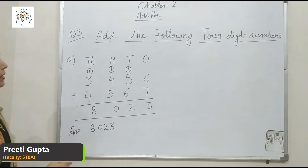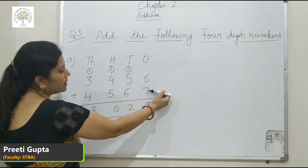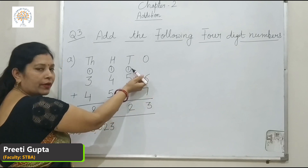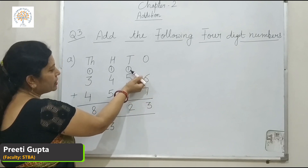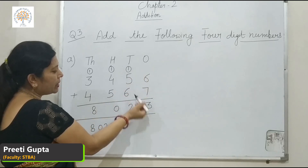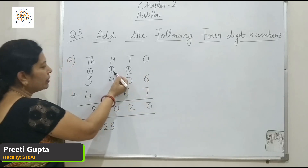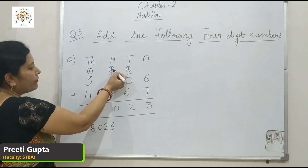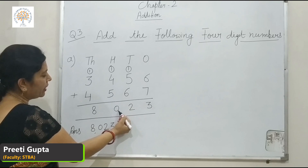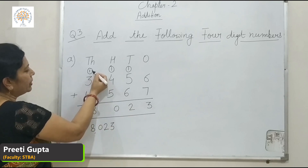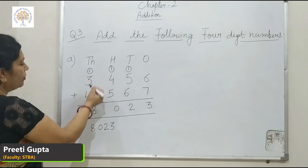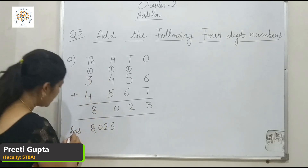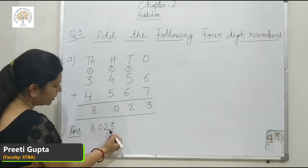I repeat: 6 plus 7 is 13 — write 3, carry 1. 5 plus 1 is 6, and 6 plus 6 is 12 — write 2, carry 1. 4 plus 1 is 5, and 5 plus 5 is 10 — write 0, carry 1. 3 plus 1 is 4, and 4 plus 4 is 8. So our answer is 8,023.